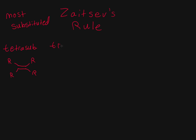The next one would be tri-substituted. We would have something with two R groups and then another R group and then just a hydrogen. So you can imagine a molecule that looks something like this — we could have a hexane ring like this. We have one, two — we need three — so we could have a methyl group branching off one side. Now we have a tri-substituted because this carbon right here has a hydrogen.